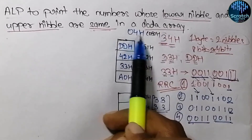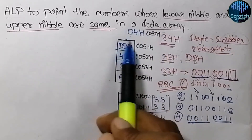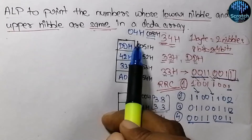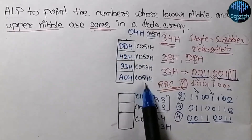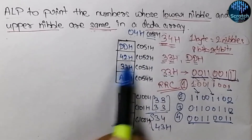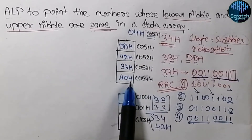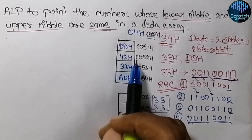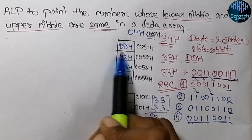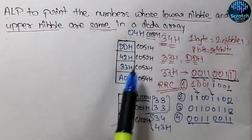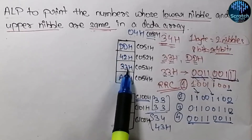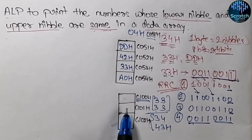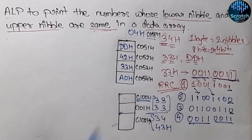Let's say we have four elements in an array. The total number of elements is input from address C050 hex, and the four elements — DD hex, 42 hex, 33 hex, and A0 hex — are at sequential locations. For each element we check if lower and upper nibbles are equal; if so, we store that data in another location. DD hex and 33 hex have matching nibbles, so these two will be stored.